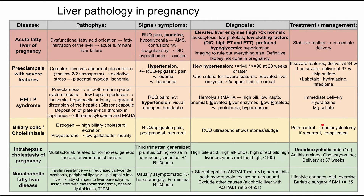Next is intrahepatic cholestasis of pregnancy. The pathophysiology is multifactorial — related to hormones, genetic factors, and environmental factors. Essentially, these moms present during the third trimester with generalized itching across their body, usually worse in the hands and feet. They can also have jaundice and right upper quadrant pain, but the predominant symptom is this itching worse in the hands and feet.